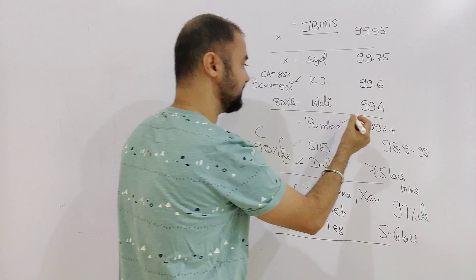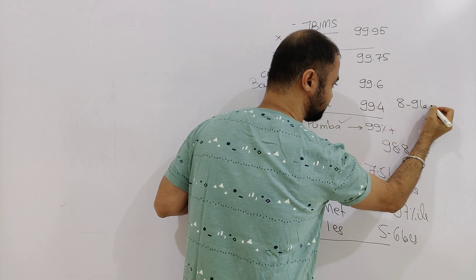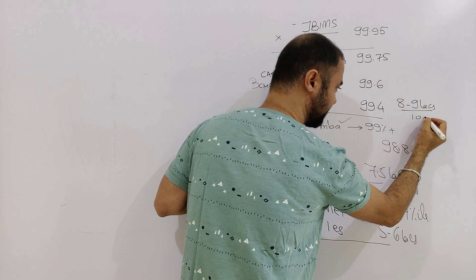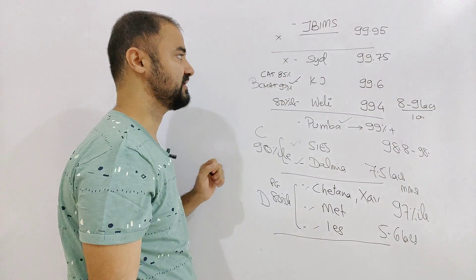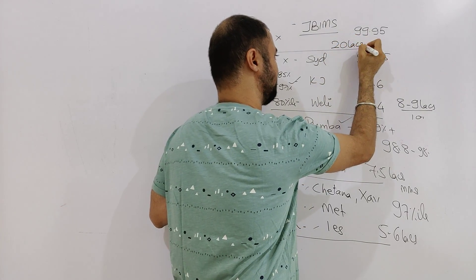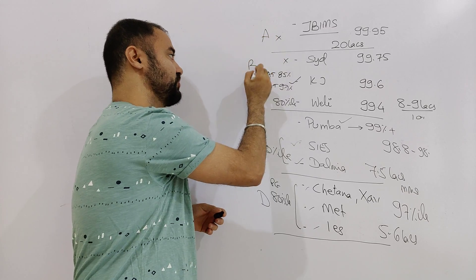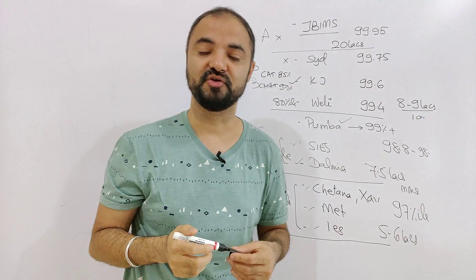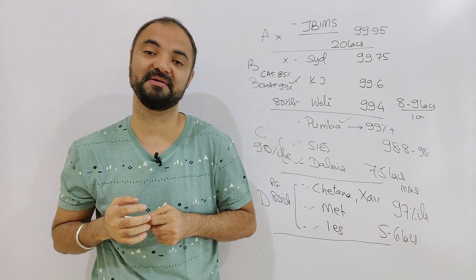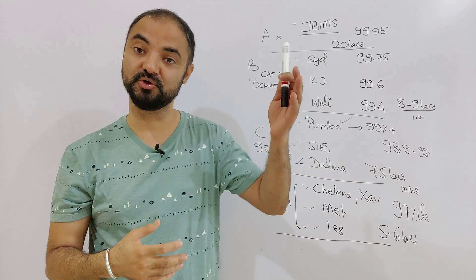So this is the cutoff. Average salary, Sydenham, Somaiya, Welingkar is now 8 to 9 lakhs. There are people who are getting 10 plus as well, but I am talking about the average is around 8, 9, 10. JBIMS this year average is turning 20 lakhs. This is the difference between Band A and Band B that there is a huge gap. Salary becomes double. So if you get 4 marks less in the CET paper, you are going to Sydenham. 4 marks more than JBIMS. So you can see the huge difference between them.